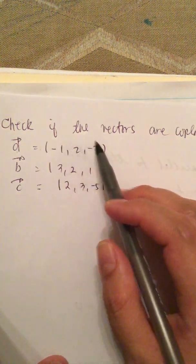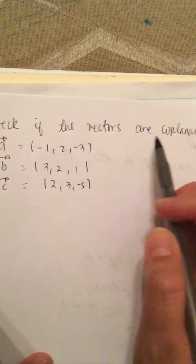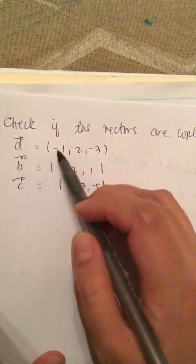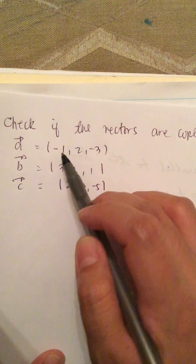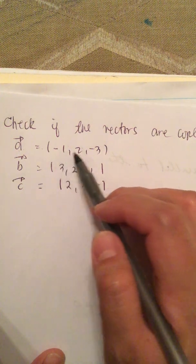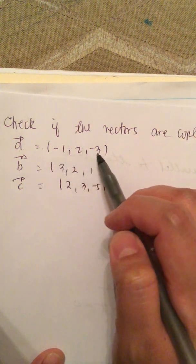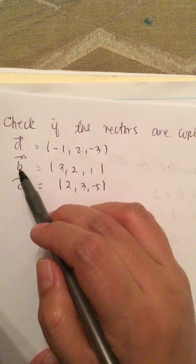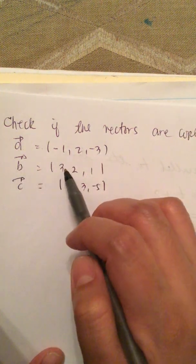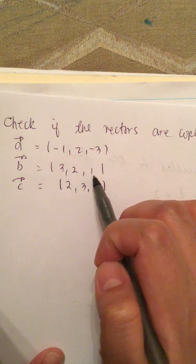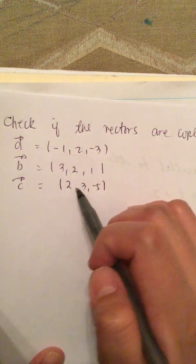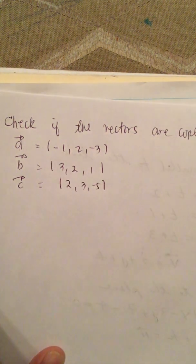Check if the vectors are coplanar. Vector A is equal to negative 1, 2, negative 3. Vector B is 3, 2, 1. And vector C is 2, 3, negative 5.